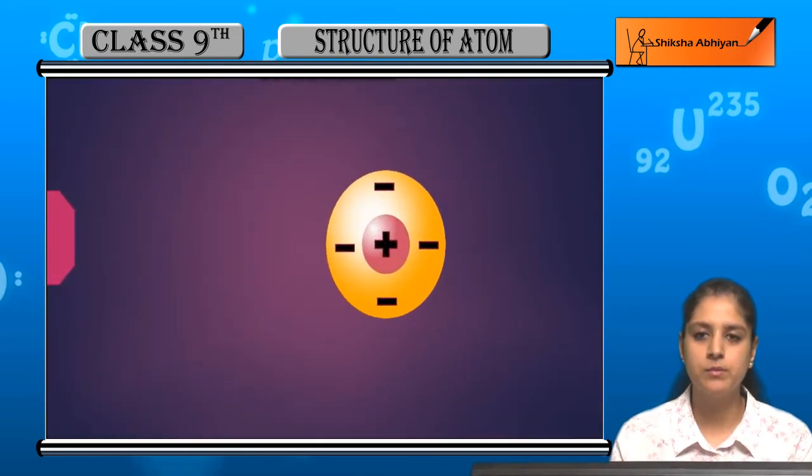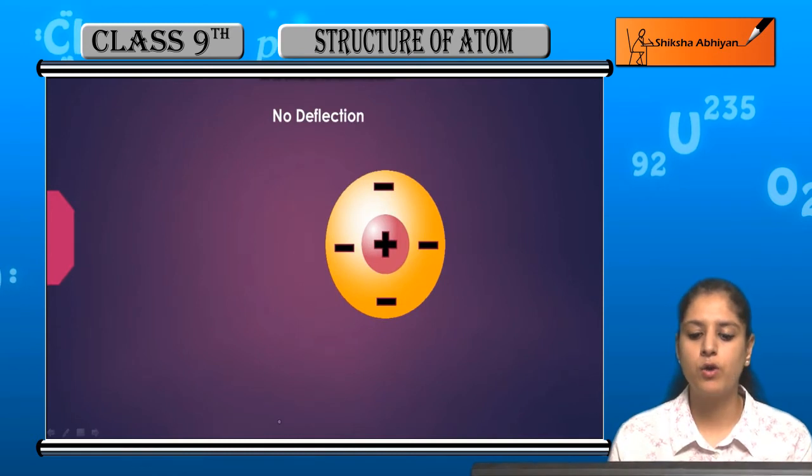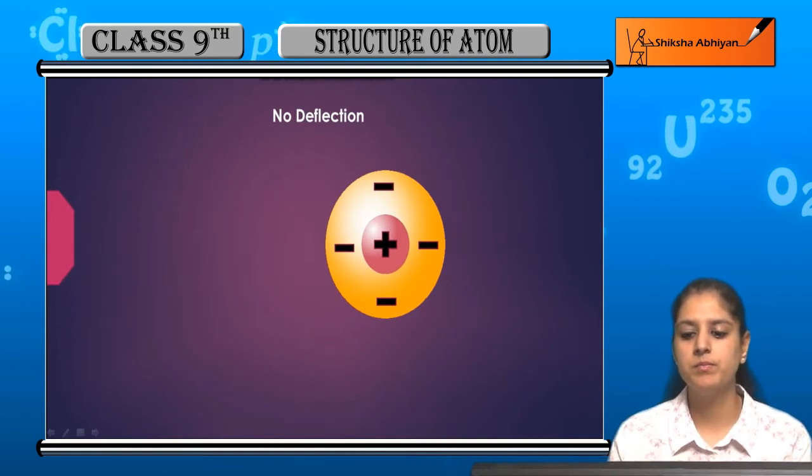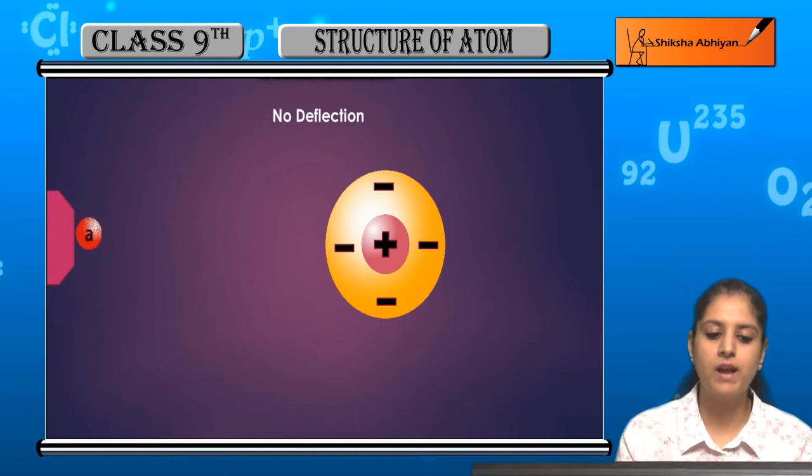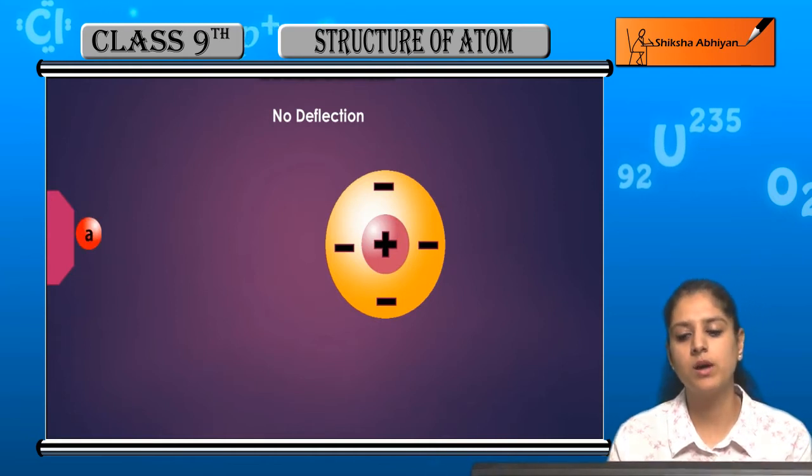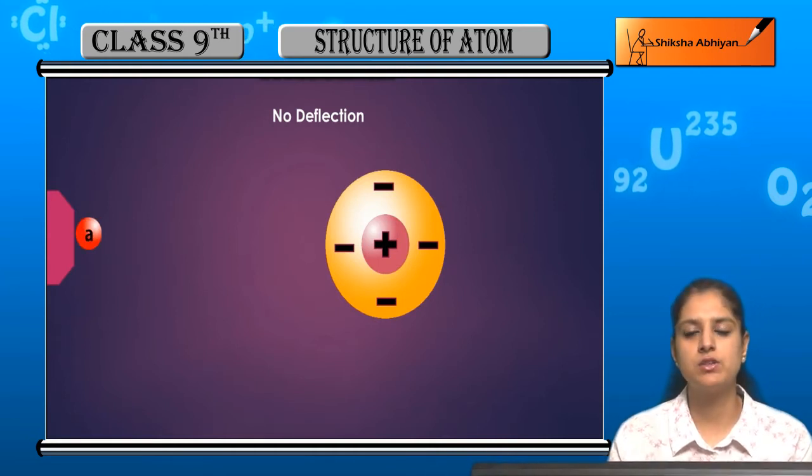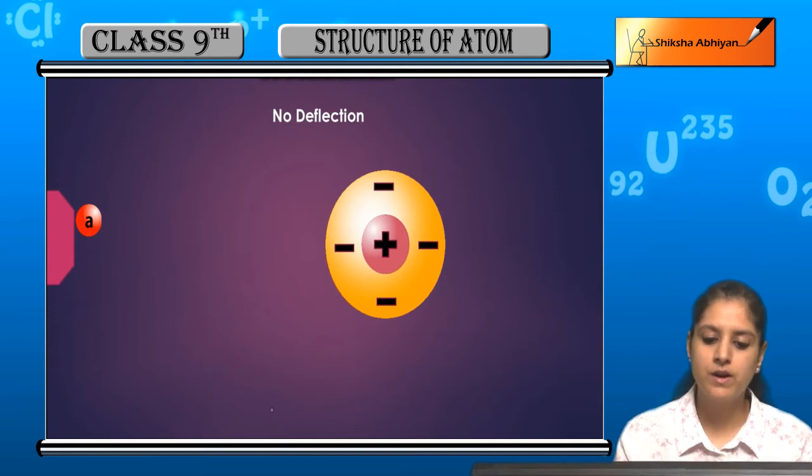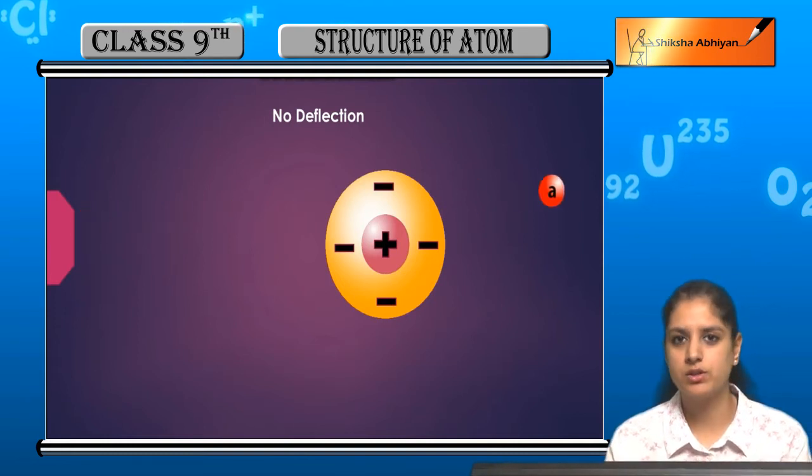Let us see how he did it. We have depicted a gold atom, and when alpha particles strike it, different types of deflections are observed. The first type of deflection was no deflection.